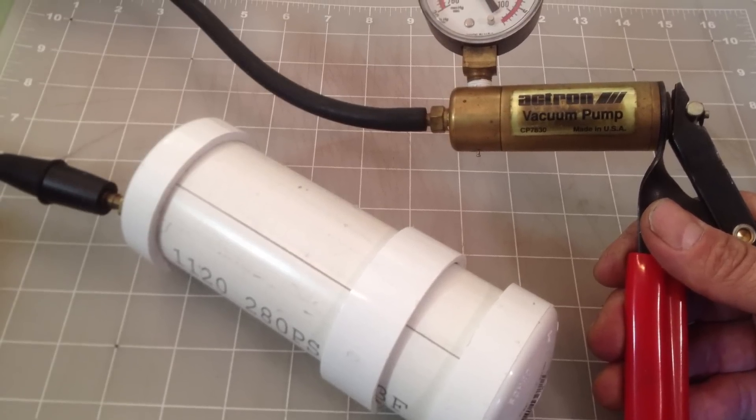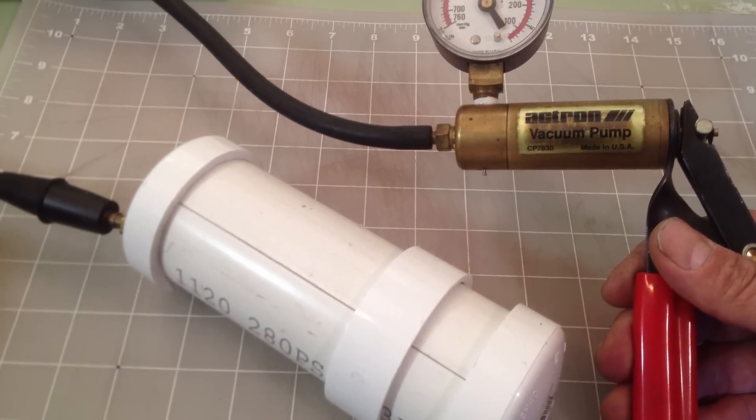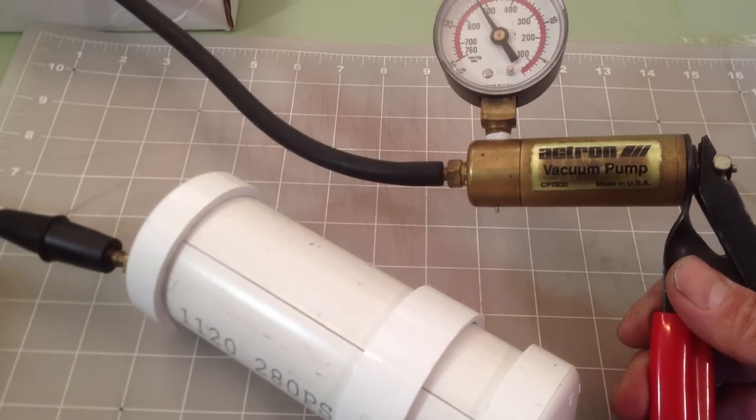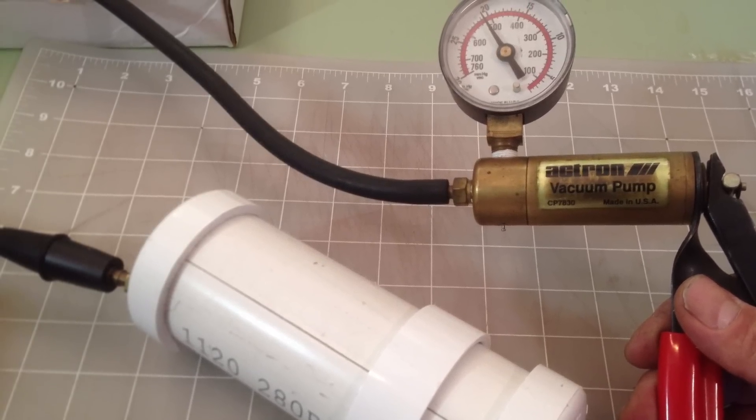Today I'm creating a vacuum chamber out of 2 inch PVC and silicone. This is an original design which I created for casting silicone molds and casting resin figures.